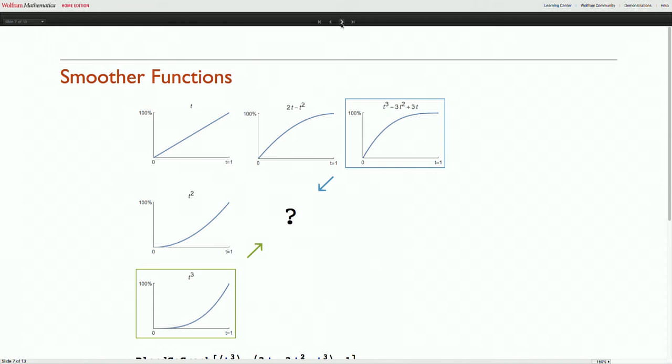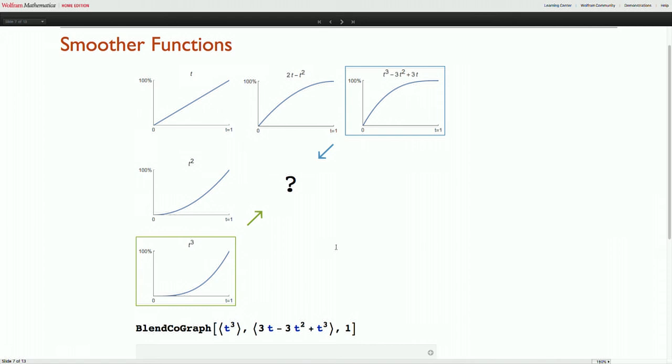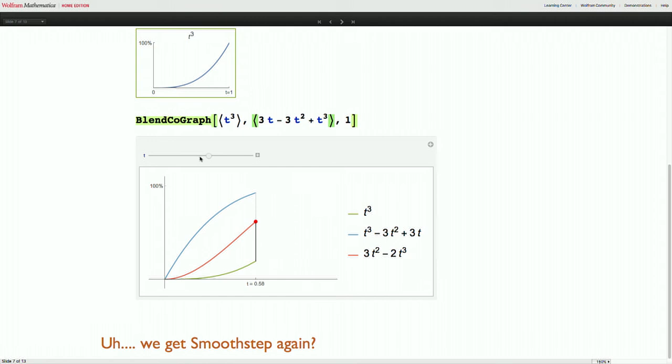So we can try to do something where we say, okay we've got one of these smoother approaches. We want to figure out what happens when we combine them. So we do that and we actually just get smooth step again. We don't get something new. So I've combined these smoother functions but they're just as smooth as the smoothest thing we had before which was not smooth enough.